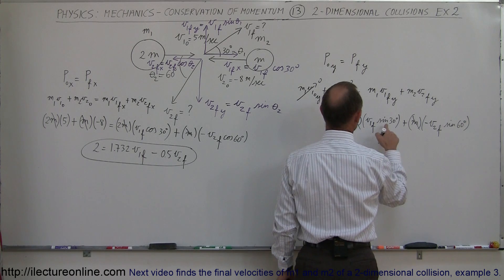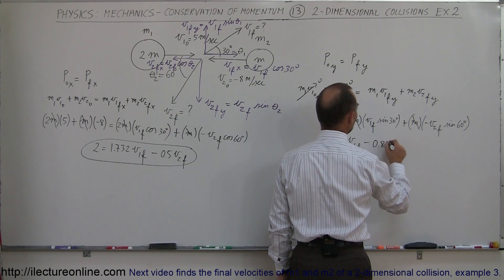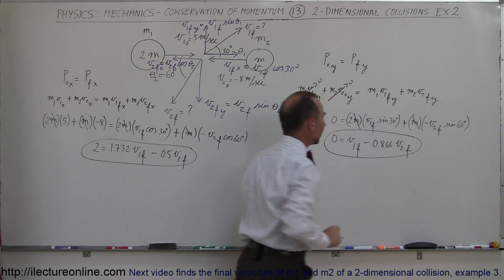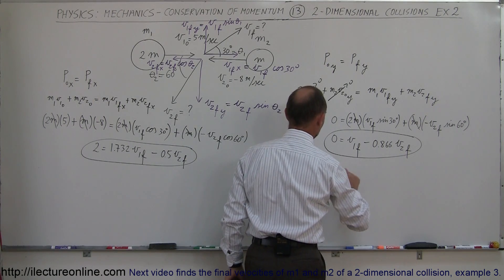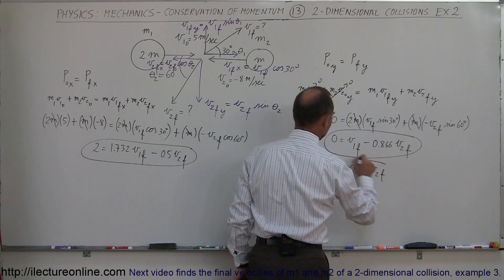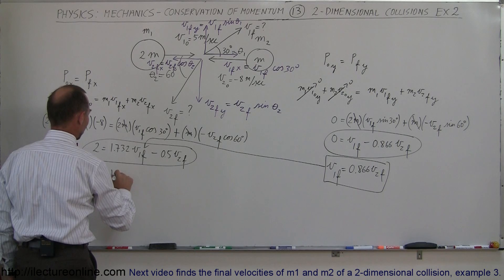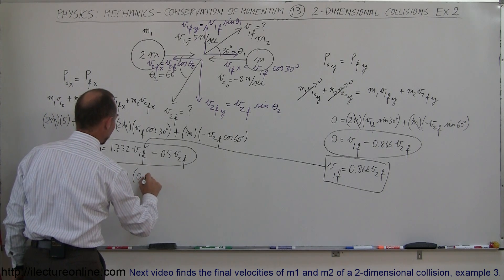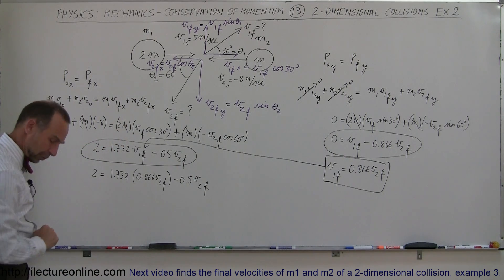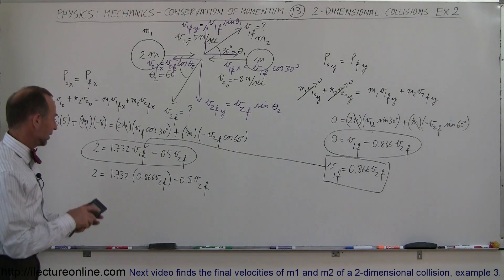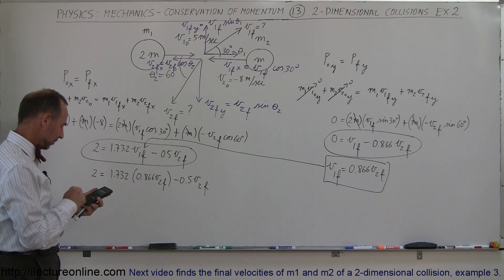For the y-direction equation: 0 = sine 30° times 2 times v1_final minus sine 60° times v2_final. Sine 30° is 0.5 and times 2 gives coefficient 1, and sine 60° is 0.866, so: 0 = v1_final − 0.866·v2_final. Solving for v1_final gives v1_final = 0.866·v2_final. Substituting into the x-equation: 2 = 1.732·(0.866·v2_final) − 0.5·v2_final. Computing 1.732 times 0.866 minus 0.5 on the calculator gives exactly 1.